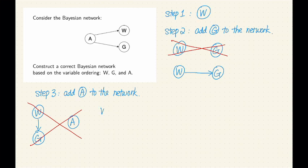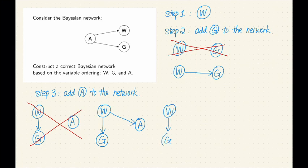Let's try to add A with only one parent and see if that works. Can we make W the only parent of A, or can we make G the only parent of A? If we want to make W the only parent of A, we need to verify that A is conditionally independent of G given W. Is this the case in our original network? Of course not. If we know W, A and G are still connected and still influence each other. So given W, A and G are not independent.